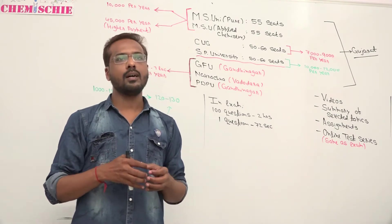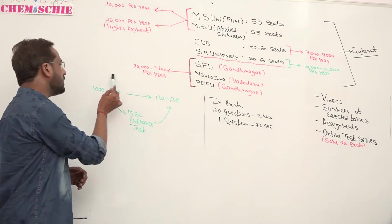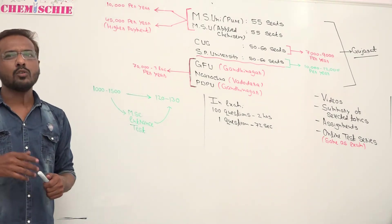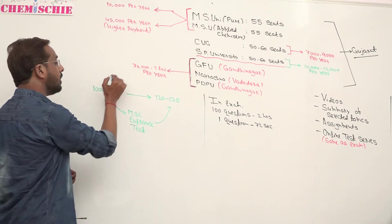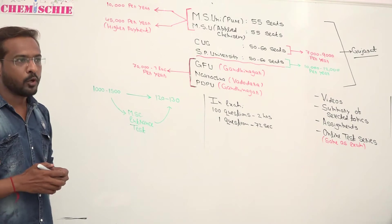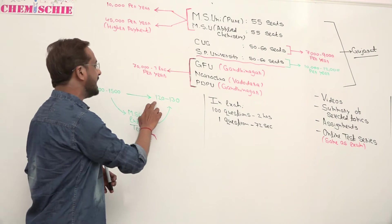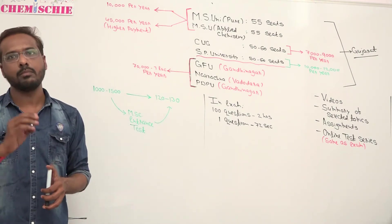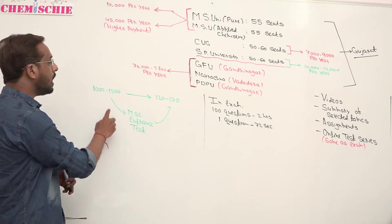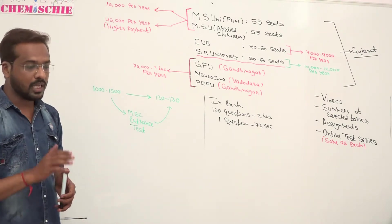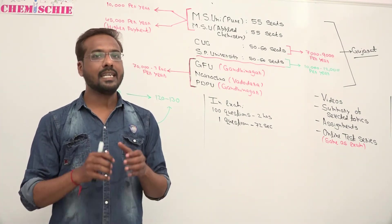How do you get into MSC? Generally in BSC there are thousands of students. If you talk about MSC, only 120-130 seats are available. How do you get to MSC? You have to meet the criteria.